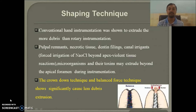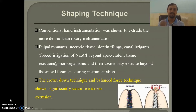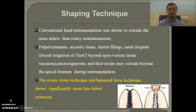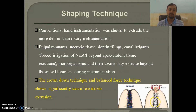With rotary instruments there are fewer chances of debris extrusion into the periapical area compared to conventional hand instruments. The debris contains pulpal remnants, necrotic tissue, dentinal filings, canal irrigants, microorganisms, and endotoxins, which cause inflammation in the periradicular space. The best shaping techniques to follow are the crown-down technique or balanced force technique — the diagram shows how proper shaping maintains balance versus how improper shaping causes imbalance between the periapical area and pulpal space.